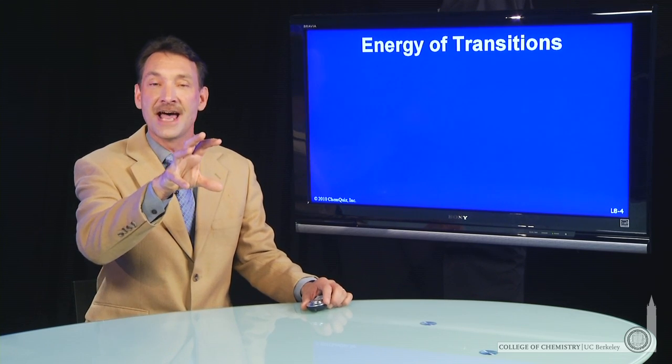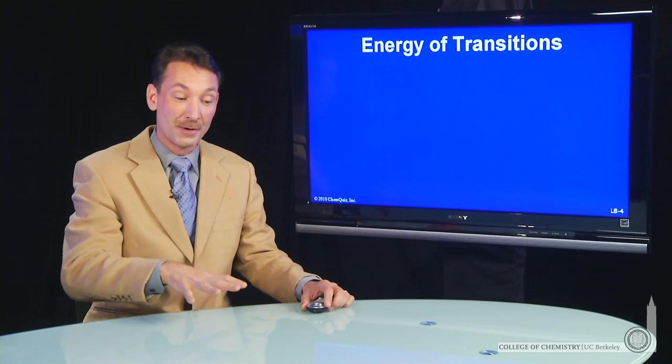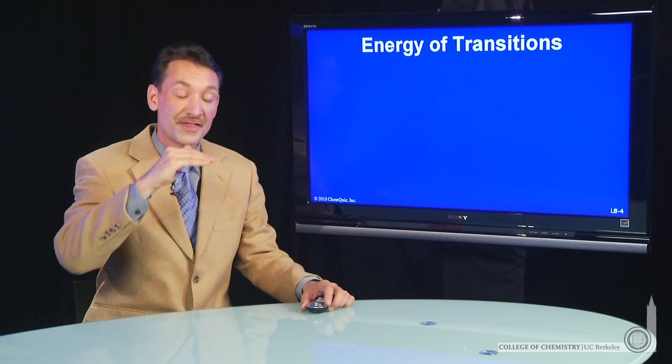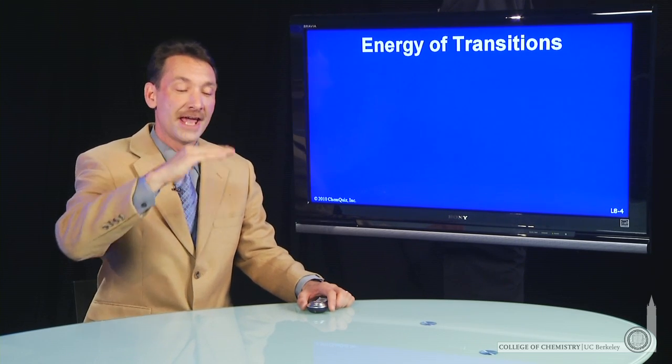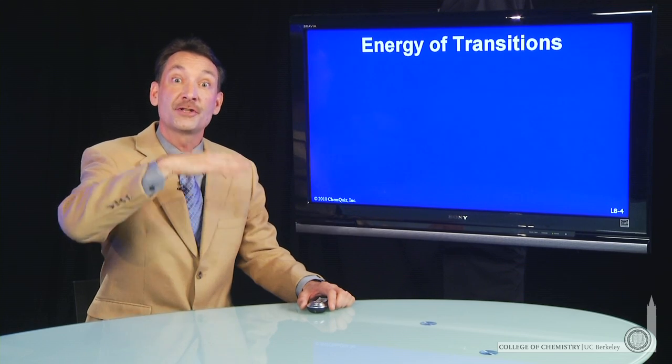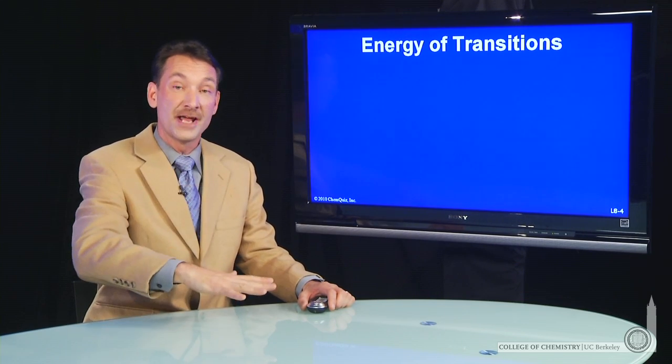There are many orbitals in an atom that an electron can occupy. Some are low energy, some are high energy, but they have specific energies between them. They're quantized energy levels, and an electron will absorb a photon of a specific energy to go from one energy level to another.